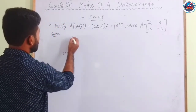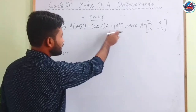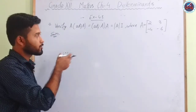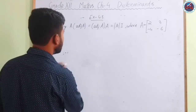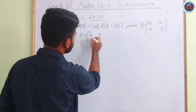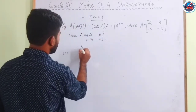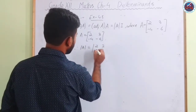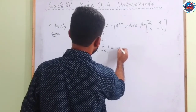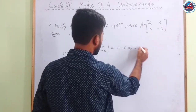Question 3 asks us to verify that A × adj(A) = adj(A) × A = |A| × I for the matrix A = [[2, 3],[−4, −6]]. First, we find det(A) = (2)(−6) − (3)(−4) = −12 + 12 = 0.